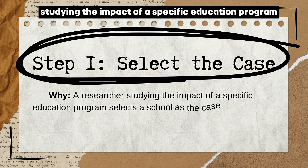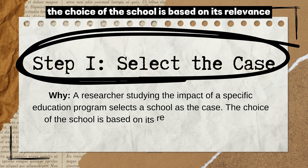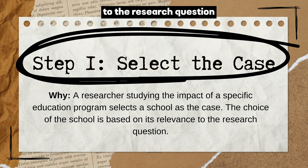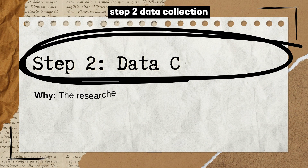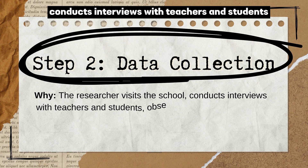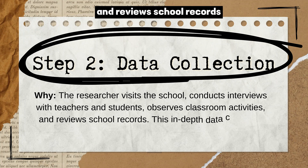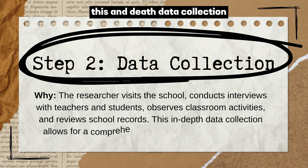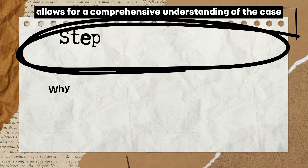Case Study Methodology — Step 1: Select the Case. A researcher studying the impact of a specific education program selects a school as the case, based on its relevance to the research question. Step 2: Data Collection. The researcher visits the school, conducts interviews with teachers and students, observes classroom activities, and reviews school records. This in-depth data collection allows for a comprehensive understanding of the case.